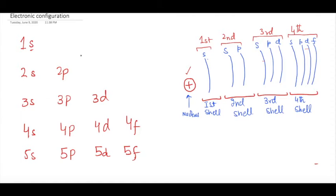In the second shell you can see 2 subshells: S and P, so I can write 2s and 2p. In the third shell there are 3 subshells: S, P, and D. In the fourth shell 4 subshells are present.